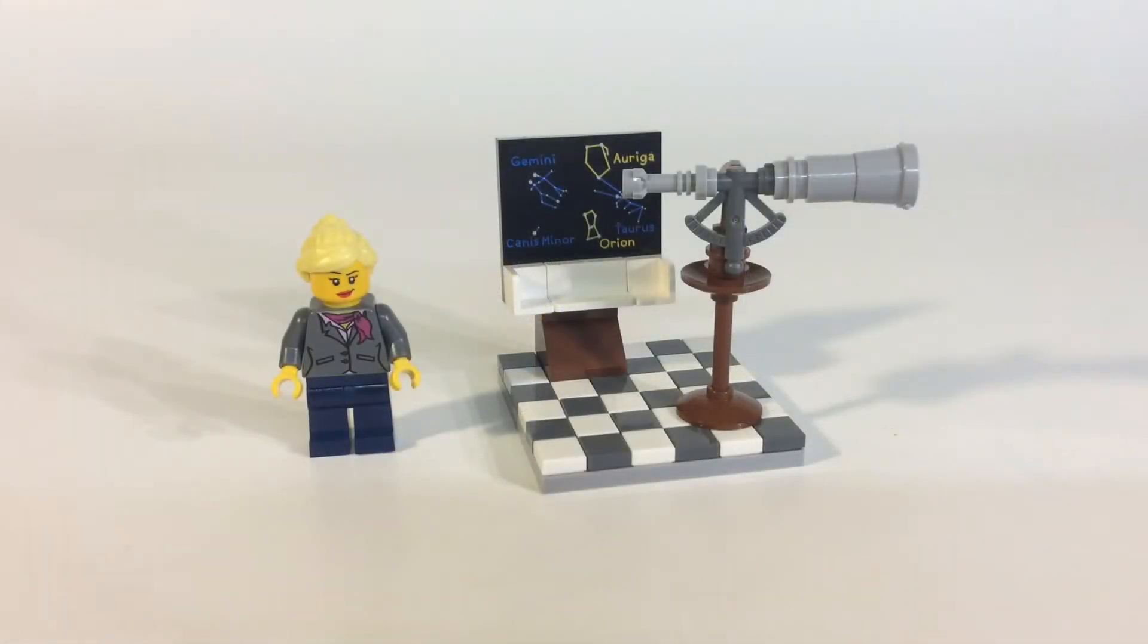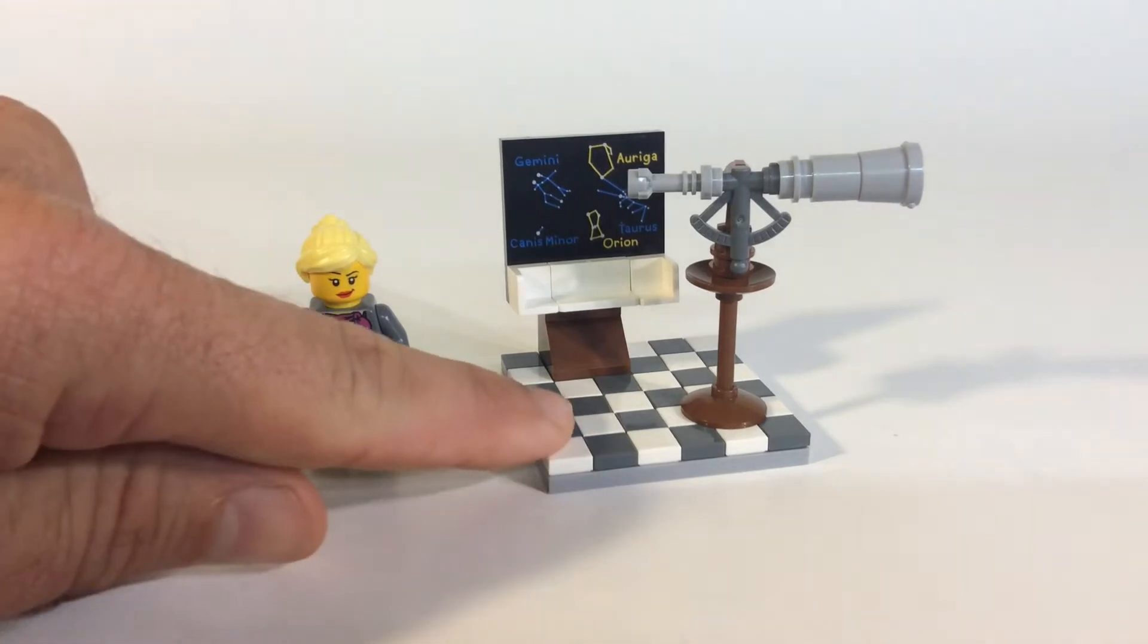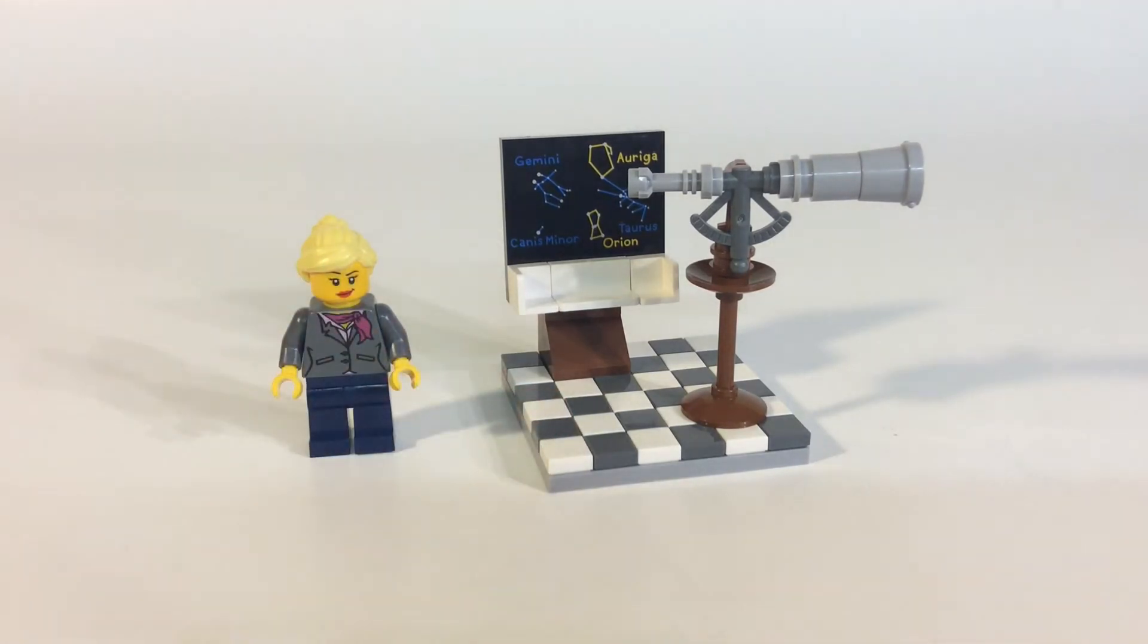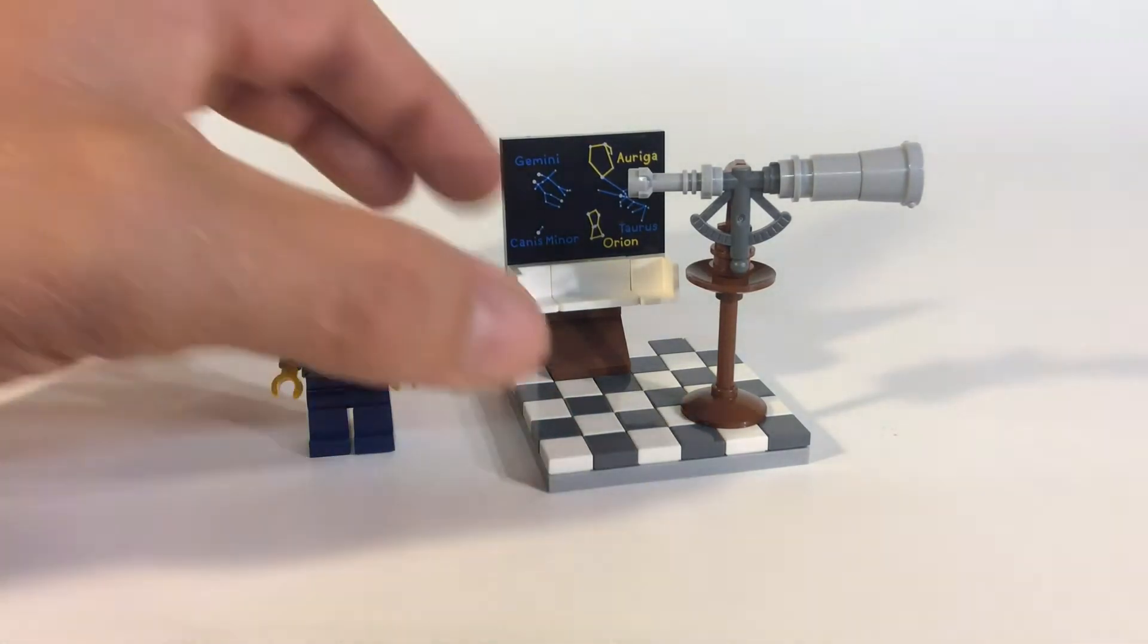Here we have our astronomer. She obviously studies the stars, kind of keeps an eye out for asteroids that might possibly hit the earth. I do like the way they did this with the checkerboard effect, but it is kind of difficult to get those straight, those one by one tiles.